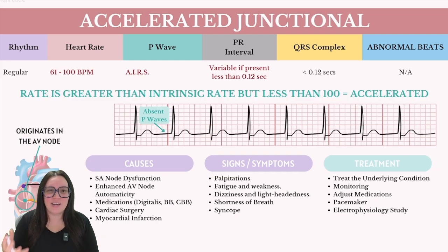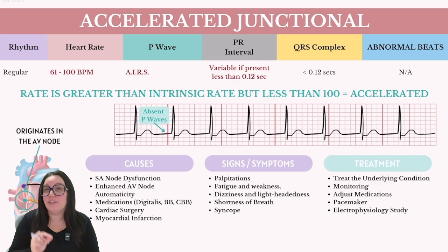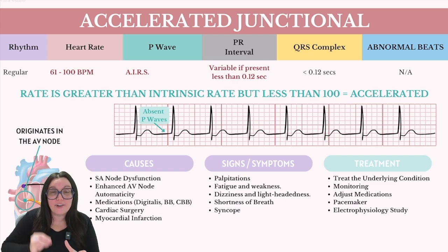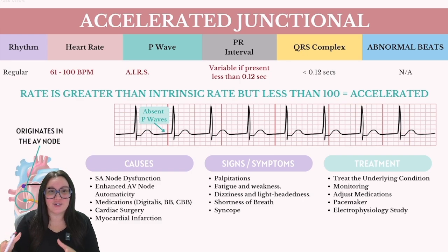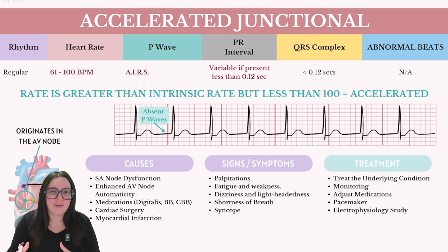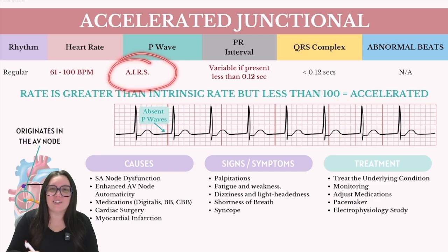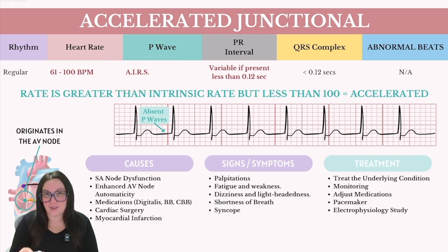Next up, we have accelerated junctional rhythms. They follow the same rules as junctional rhythms; however, they have a little bit of a faster heart rate. Any time our heart rate is greater than the intrinsic rate but less than 100, we call these rhythms accelerated. The intrinsic rate for the AV node is between 40 to 60 beats per minute, so anytime the rhythm is between 61 to 100 beats per minute and meets that junctional criteria, we call that rhythm accelerated.